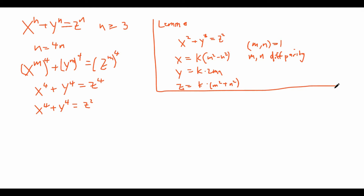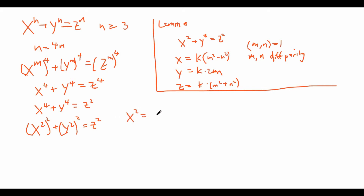We're going to use this lemma to prove that x to the power of 4 plus y to the power of 4 equals z squared has no positive integer solutions. Right off the bat, x to the power of 4 is (x²)², and y to the power of 4 is (y²)², so this is already in the format for our lemma. We can substitute: x² = k(m² − n²), y² = k(2mn), and z = k(m² + n²).